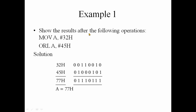Show the result after the following operation: MOV A, 32H. 32H is loaded into the accumulator. This is ORL A, 45H. 45H is ORed with accumulator value 32H.